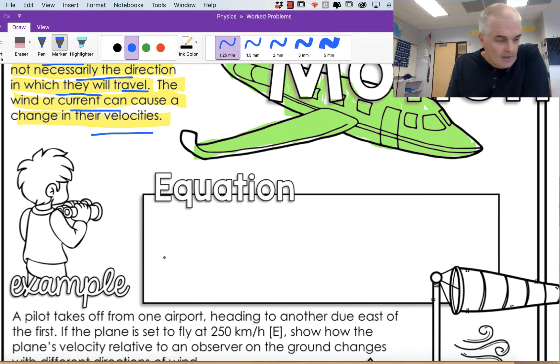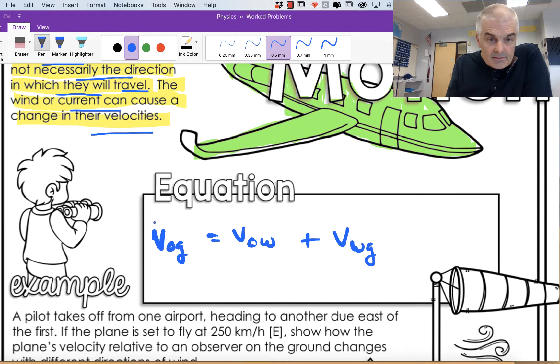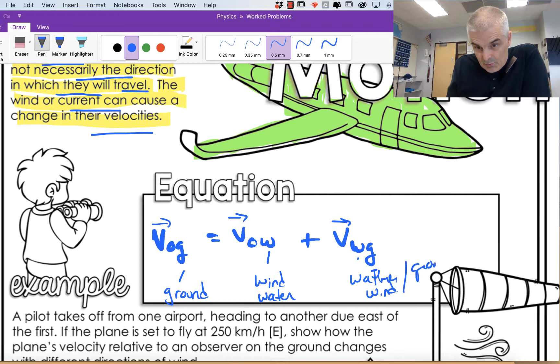So here's the big monster equation: VOG equals VOW plus VWG. These will all be vectors, of course. What is VOG? The velocity of the object with respect to the ground. VOW is the velocity of the object with respect to the wind or the water. If it's current, it could be an airplane or a boat or ship. And VWG is the velocity of the wind or the water relative to the ground. That's the equation.